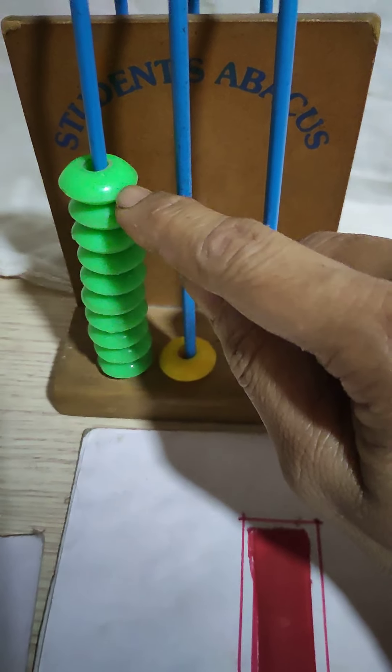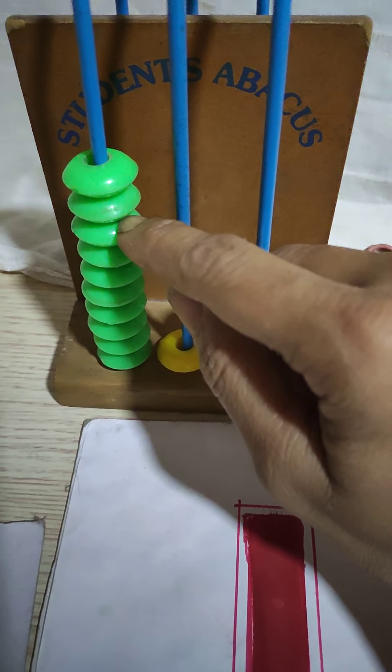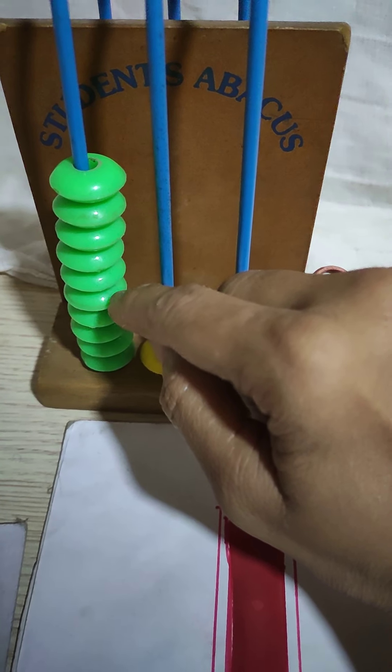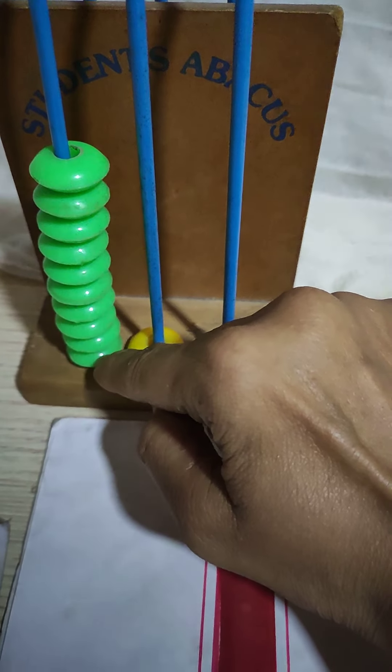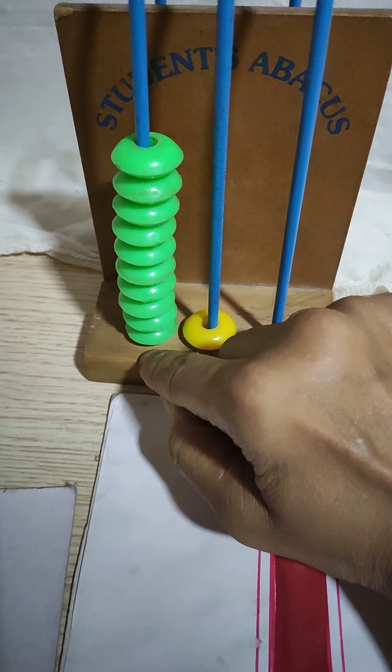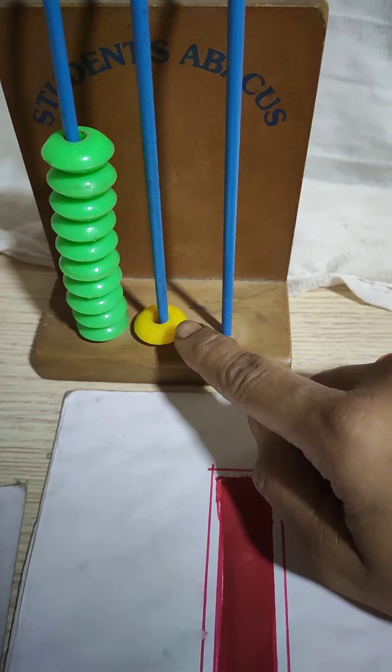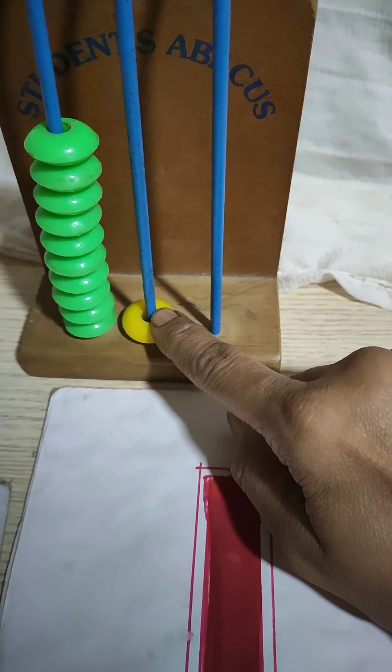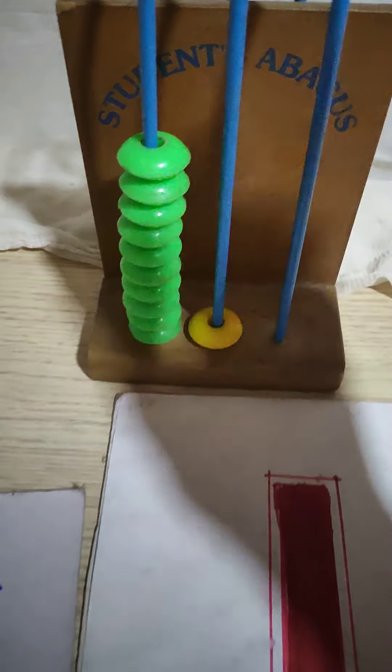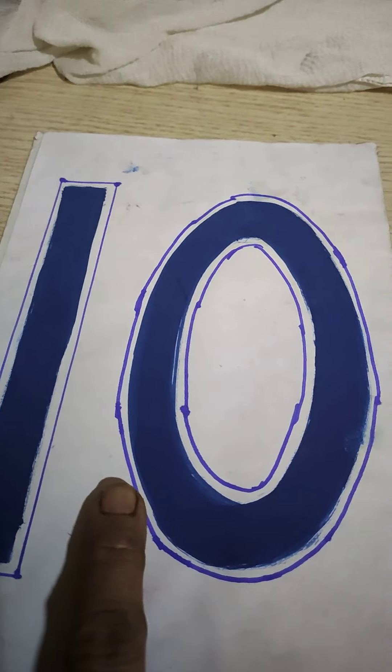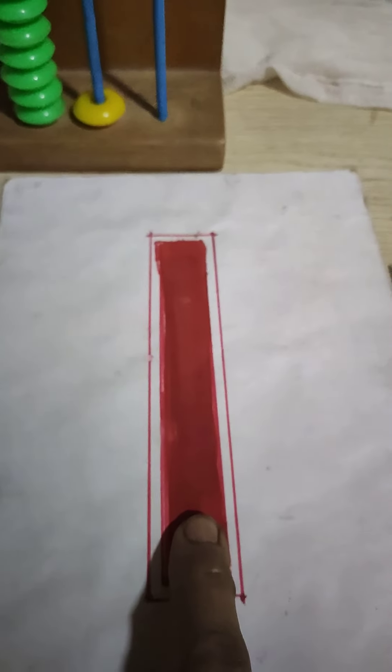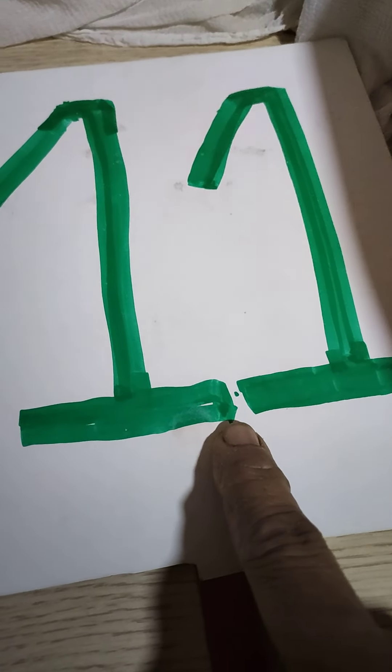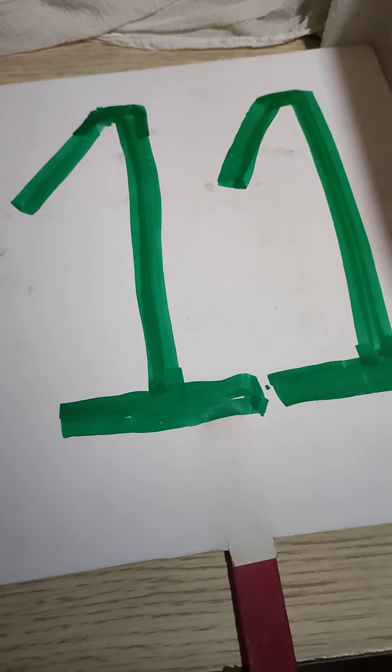Now let's count. How many beads? 1, 2, 3, 4, 5, 6, 7, 8, 9, 10. 10 beads. 10 plus 1. How many? 10 plus 1 is equal to 11. 11. Total how many beads? 11.